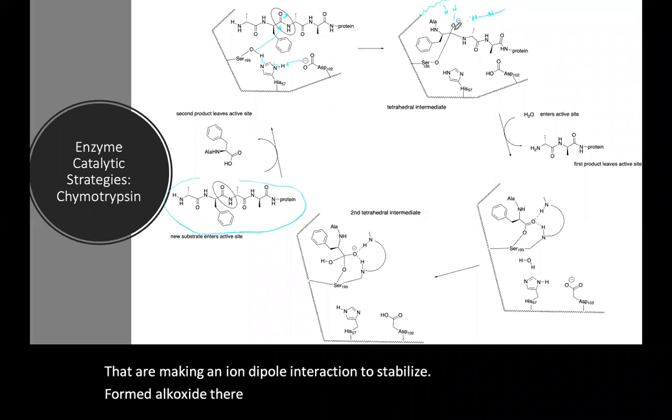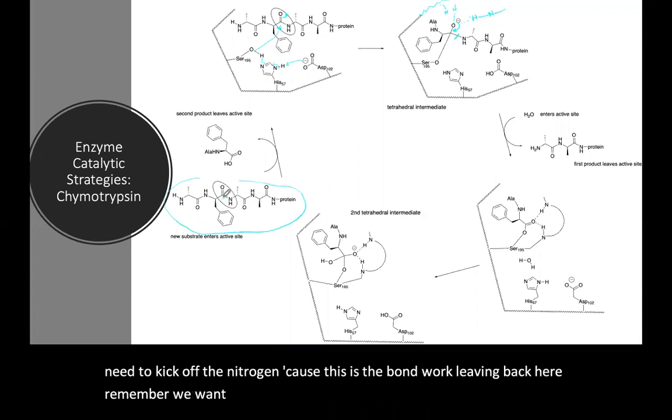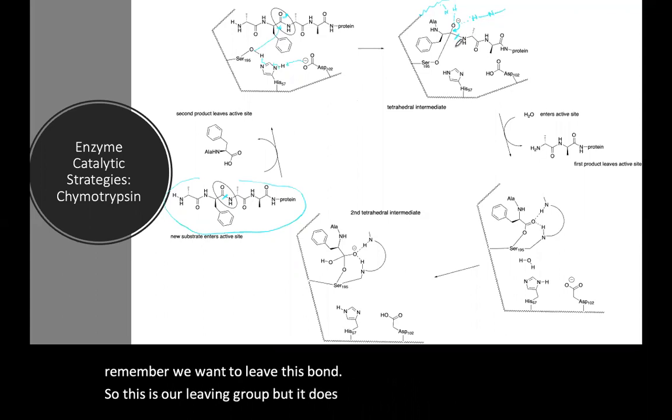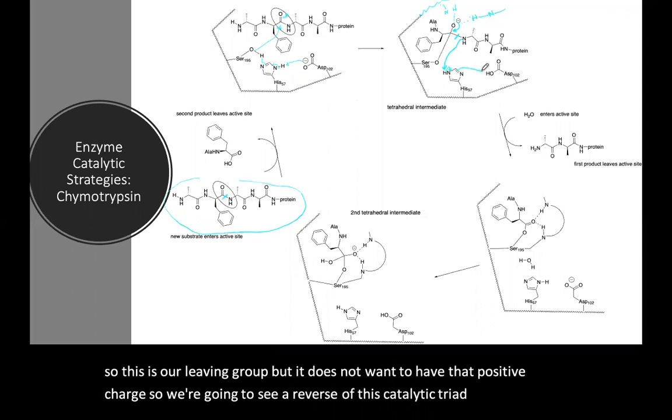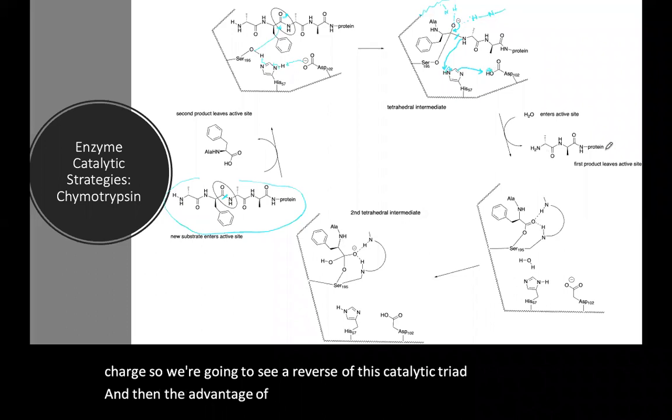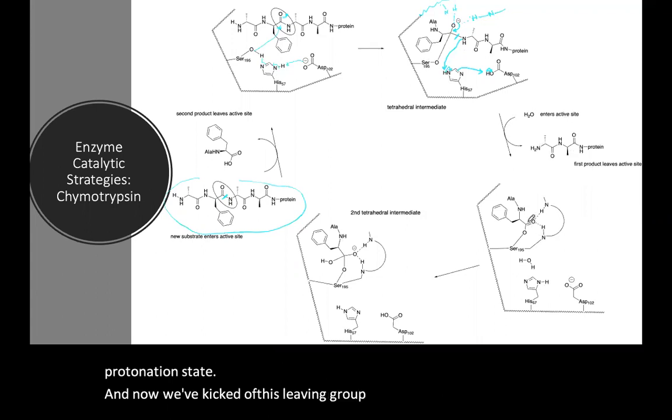So then in this stage this is a pi donation and we need to kick off the nitrogen because this is the bond we're cleaving back here. Remember we want to cleave this bond. So this is our leaving group but it does not want to have that positive charge so we're going to see a reverse of this catalytic triad. And then the advantage of this is that we've regenerated down here our catalytic triad with the aspartate with the minus the histidine in its original protonation state. And now we've kicked off this leaving group and we've formed an ester to the serine.